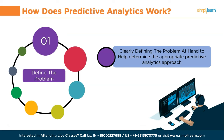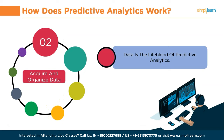So, let us discuss how predictive analytics works. First, data scientists or data analysts define the problem. The journey of predictive analytics begins with clearly defining the problem at hand. Whether it's fraud detection, inventory optimization, or predicting potential flood levels, a well-defined problem statement helps determine the appropriate predictive analytics approach to employ. Once you define a problem, it is important to acquire and organize data properly. Data is the lifeblood of predictive analytics. Organizations may have vast amounts of historical data or continually streaming data from various sources like customer interactions. The first step is to identify and acquire the relevant data and then organize it in a central repository, such as a data warehouse or BigQuery, to facilitate efficient data processing.